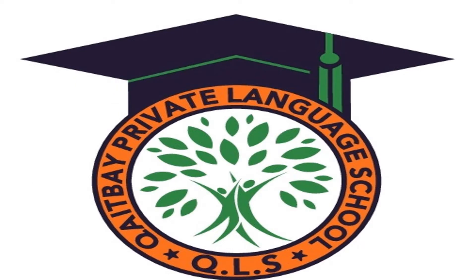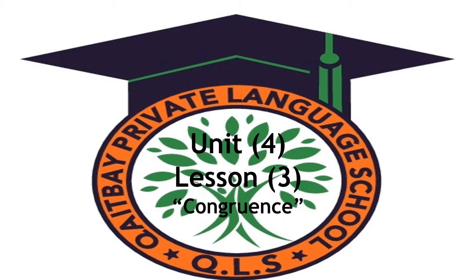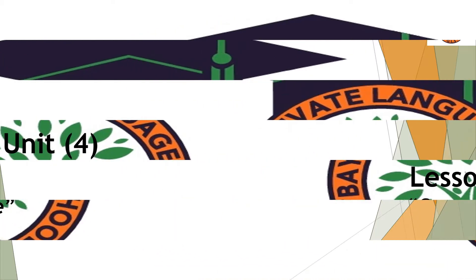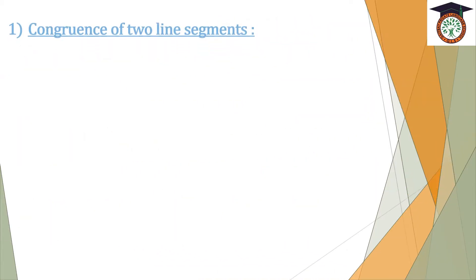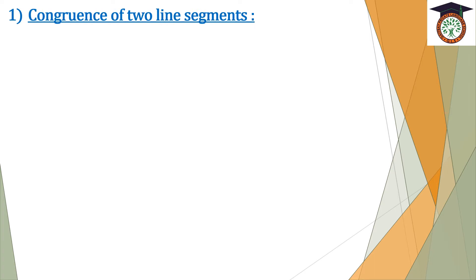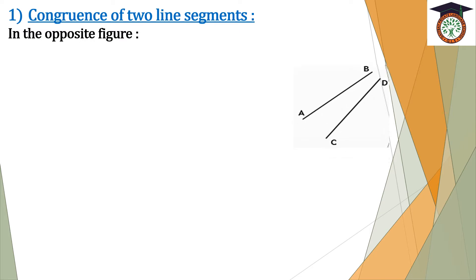Good morning dear students. Our lesson today is called congruence, and this is our sign of congruence. For congruence of two line segments, in the opposite figure, we have AB as a line segment and CD is a line segment.